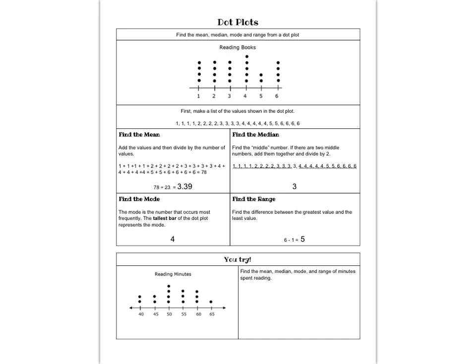To read a dot plot you count the number of dots over each number. In this case that number of dots tells you how many books each student read. So to find the mean, median, mode, and range here what we want to do first is make a list of the values shown in the plot. So my list has four ones, four twos, four threes, five fours, two fives, and four sixes.